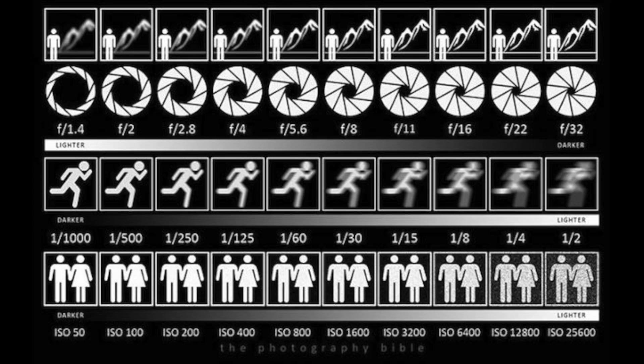Aperture controls the depth of field. A small f-stop number gives you a shallow depth of field, and a large number gives you a wide depth of field. So if you want to keep mountains in the background in focus, you want a bigger number. If you're taking a picture of a person and you want the background blurred, you're going to use a smaller number.